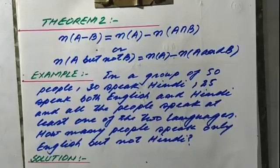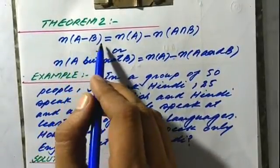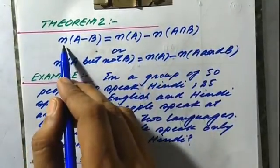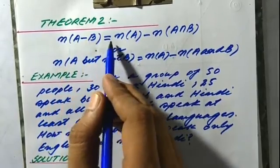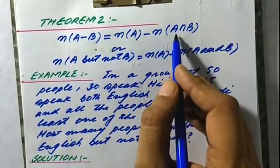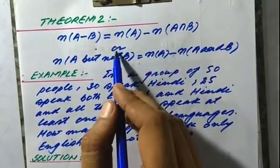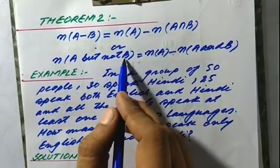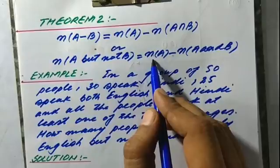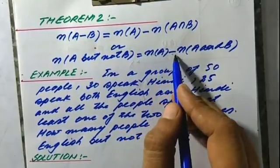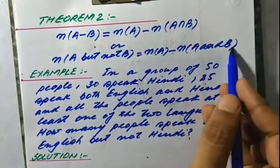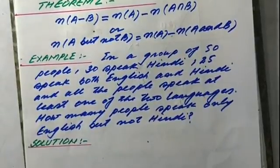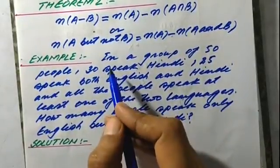Now Theorem 2: n(A minus B) is equal to n(A) minus n(A intersection B). That is, the cardinal number of the set A minus B equals the cardinal number of A minus the cardinal number of A intersection B. In words, the cardinal number of the set 'A but not B' equals cardinal number of A minus cardinal number of A and B.